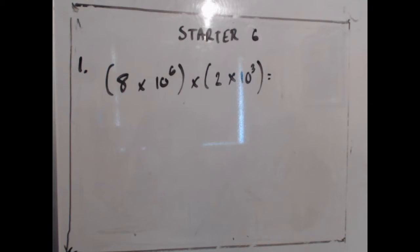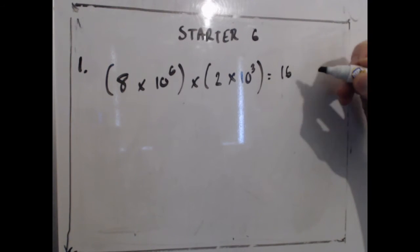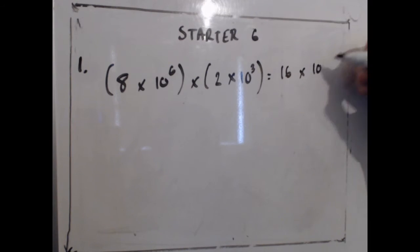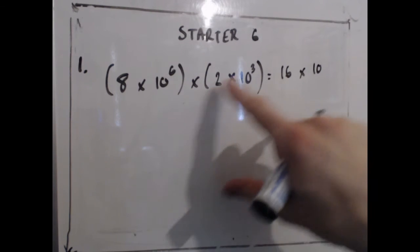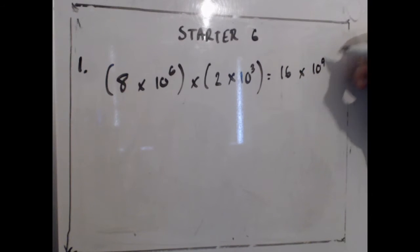Question 1 is a standard form question. We can do a lot of this without having to think too much to start with. 8 times 2 is going to give me 16, and I multiply it by 10 to the power of 6, multiply by 10 to the power of 3, adding the powers, that will be 10 to the power of 9.